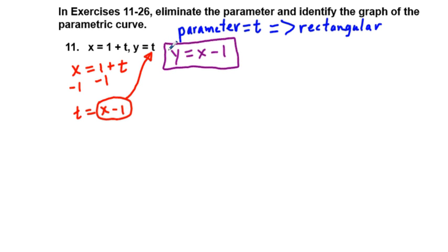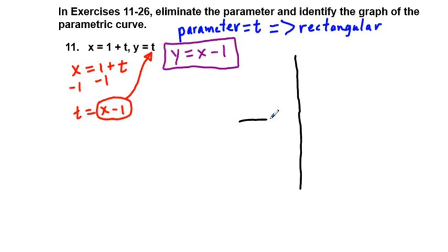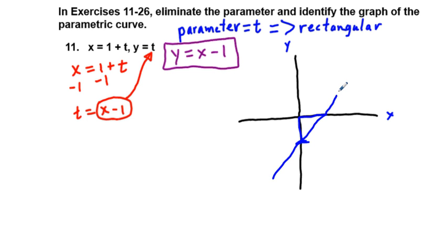Does this equation look much like the parametric equations? Kind of. Let's go ahead and graph this equation. We have a quick sketch. We have a y-intercept of negative 1, so we come down here to negative 1. Our slope, our rise over run, is 1 over 1, so we go up 1 over 1. Our graph of the parametric equation converted to rectangular is going to look like this.